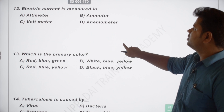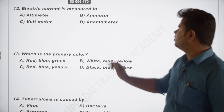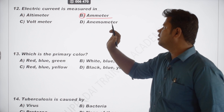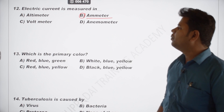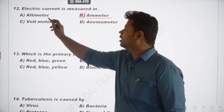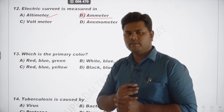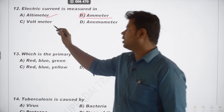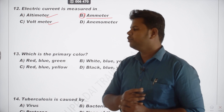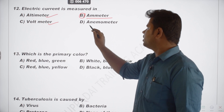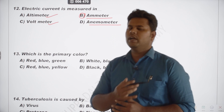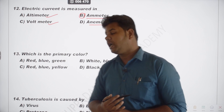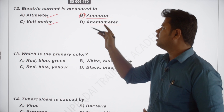The next question: electric current is measured in which unit/instrument? Current is measured by an ammeter. An altimeter measures altitude. A voltmeter measures voltage. An anemometer measures wind speed and wind pressure.